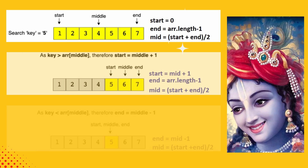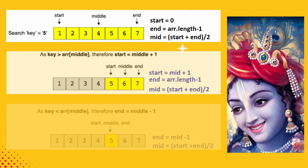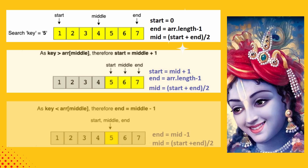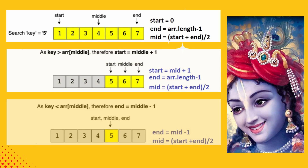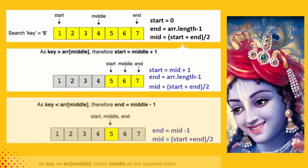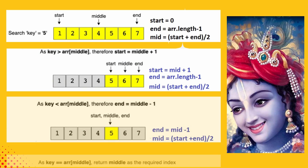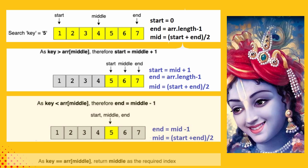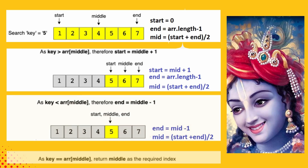End index still remains at array length minus 1. And again we find the middle index by adding start index plus end index divided by 2. In case the given number is less than the array middle index, that means the key value is present only in the first half of the array, and the second half can be eliminated. To do that, we change the end index by initializing it to middle index minus 1. Again we find the middle index by adding start index plus end index divided by 2. This loop continues until the key element is equal to the array value at the middle index.